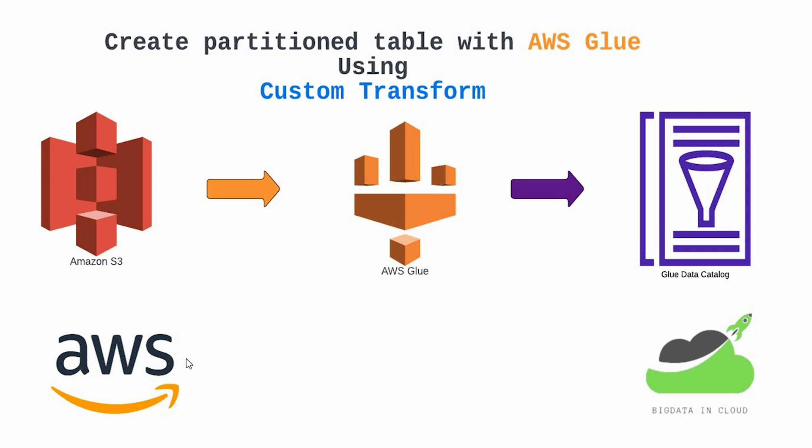A partition table is a kind of segmented table where each segment is known as a partition. When you query a partition table, it only looks for that particular partition rather than looking into the whole table, which saves cost and compute. In data engineering, partition tables are highly recommended. We'll learn how to create a partition table from a simple CSV file stored in an S3 bucket.